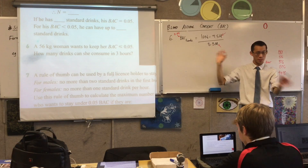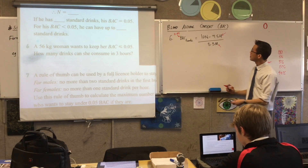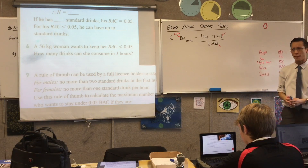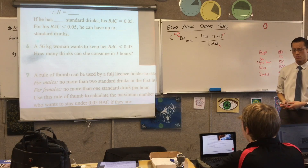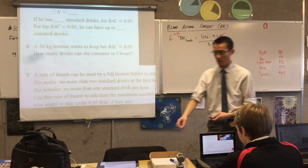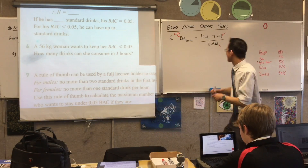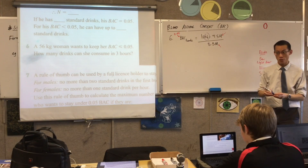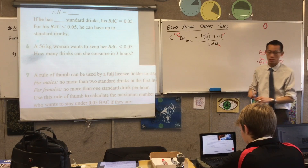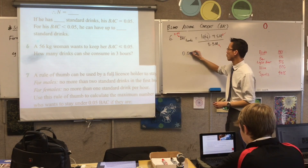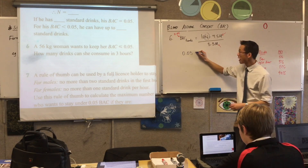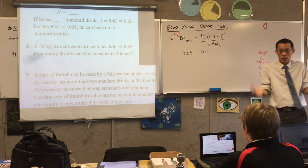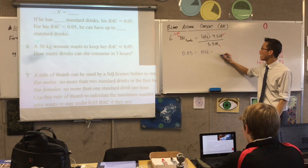Think back to AM1 — substitution. This is just an algebra question. There's one letter, one pronumeral left — what is it? Why is it left over? Because I don't know what it is, so that's why I'm going to solve for that. Let's do the substitution. Left-hand side: I've got 0.05, I've got 10, and I have to write N because I don't know what it is, take away...